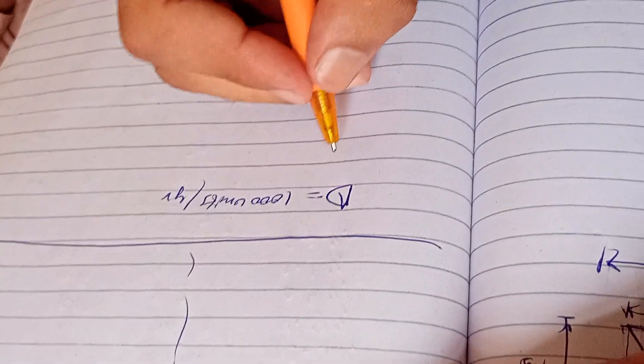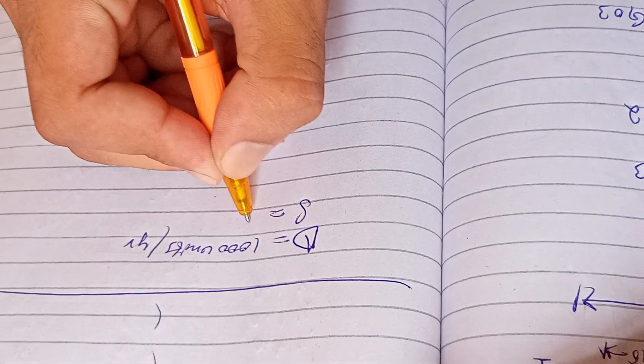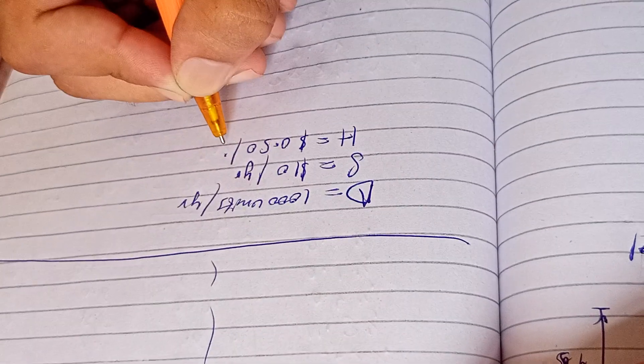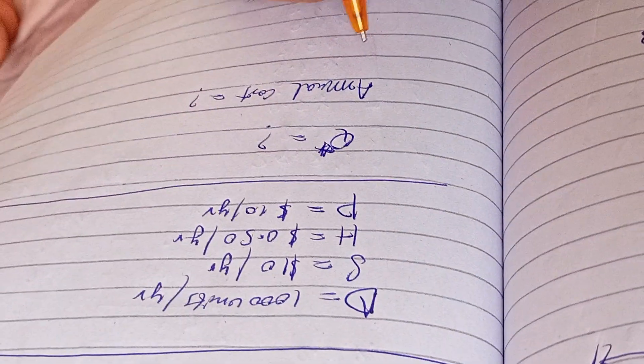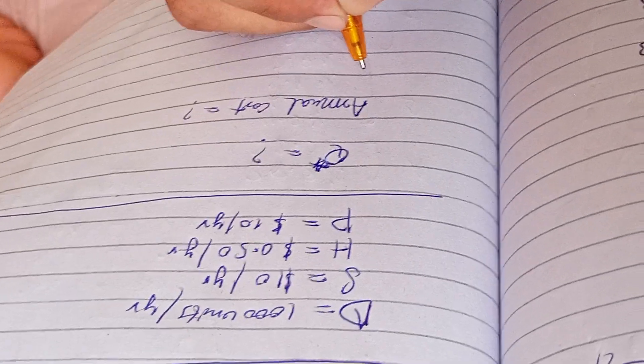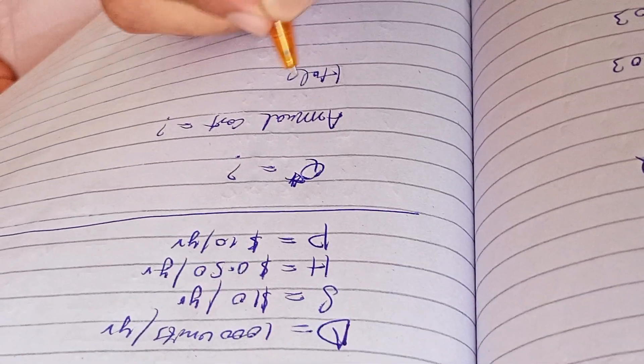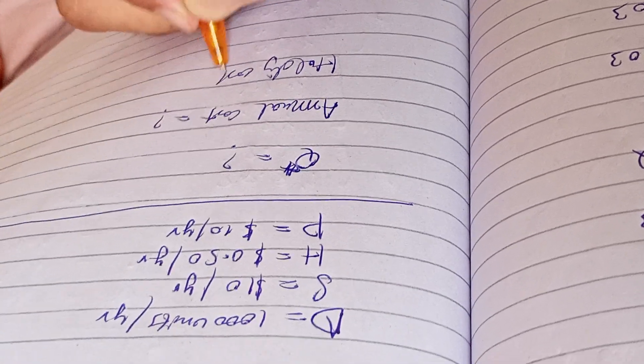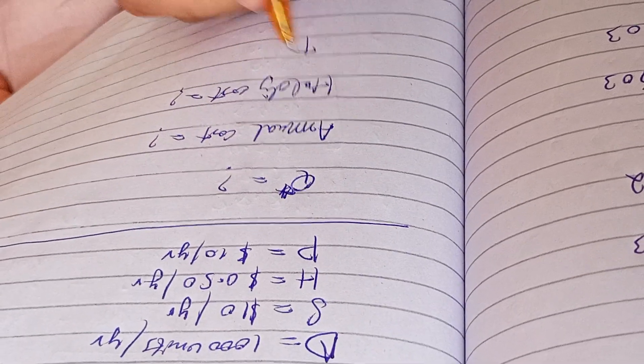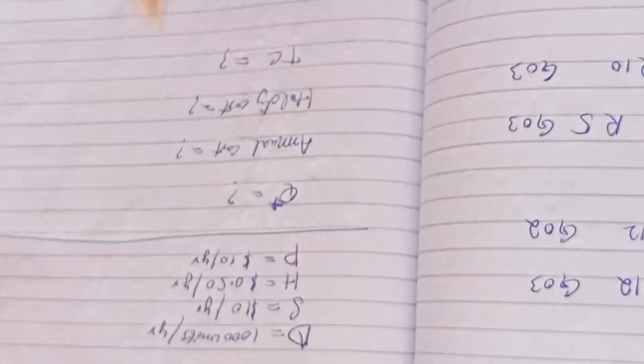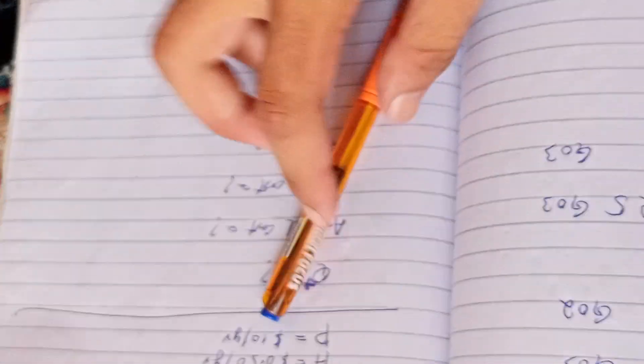I told you the setup cost is $10. Annual production rate, that will find Q and annual cost and holding cost, total cost. In this case, what are we going to find? What are we going to find?